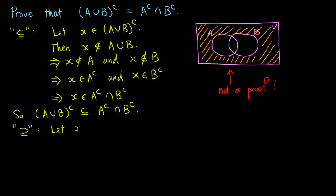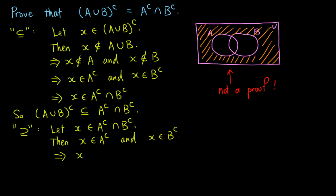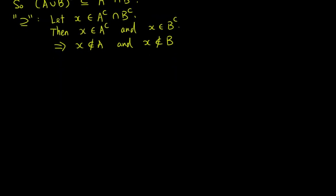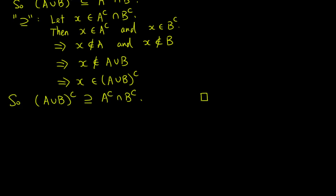Conversely, let X be an element of A complement intersect B complement. Then X is in A complement, and X is in B complement. So we need X to be not in A, and X to be not in B. Again, this is the same thing as not inside A union B. So X is in the complement of A union B, which proves the other inclusion.